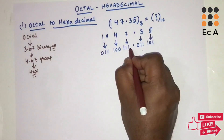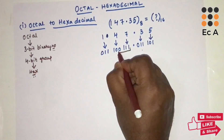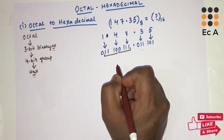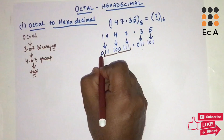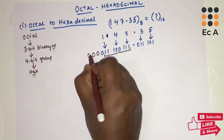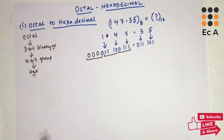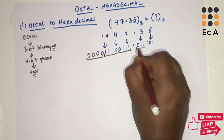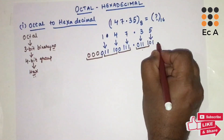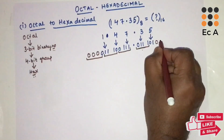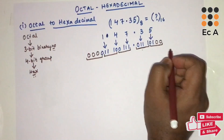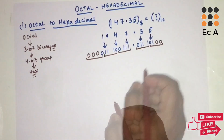Now let us group this binary number into groups of 4 bits. From the binary point, grouping towards the left: the leftmost group has only one bit remaining, so we add three leading zeros. Towards the right-hand side, after grouping four bits, we are left with two bits, so we add two trailing zeros, then make a group of four bits.